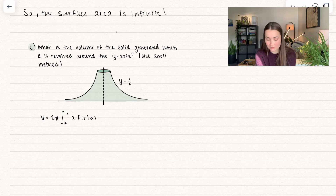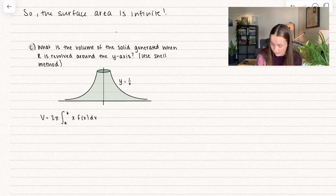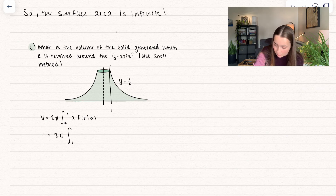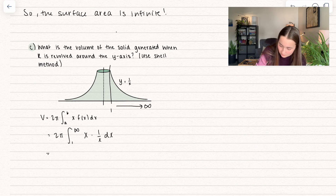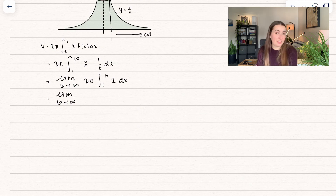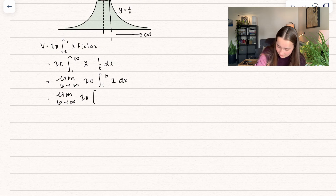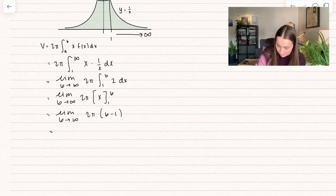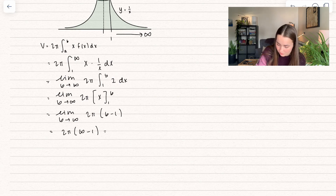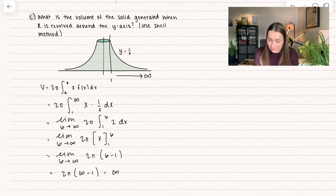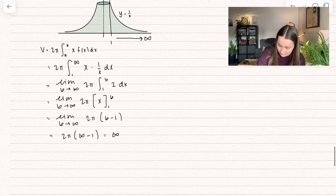Now let's find the volume of the solid generated when R is revolved around the y-axis. We're going to use the shell method. We have a lower bound of 1 — that's where x equals 1 — and we're revolving R all the way to infinity, so our upper bound is infinity. That gives us 2 pi times the integral from 1 to infinity of x times 1 over x dx. Rewriting it properly: the limit as b approaches infinity of 2 pi times the integral from 1 to b of 1 dx. We can simplify the inside to just 1, and we get x evaluated between 1 and b. Plugging in upper minus lower: 2 pi times b minus 1. When we plug in infinity, we get 2 pi times infinity minus 1, which is just infinity. So when we revolve the solid around the y-axis, we have an infinite volume.